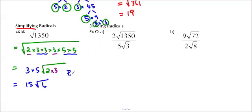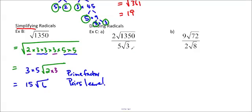Sometimes you might be asked to simplify a division like this fraction. What you do is basically cancel, just like you would a regular fraction. There's a special rule: you can only cancel outsides with outsides and insides with insides. So I can't cancel a number outside the radical with a number inside the radical — you have to keep outsides with outsides and insides with insides. We know that root 1350 is actually 15 root 6, so we could cancel the 3 from both, or we could simplify and then cancel.